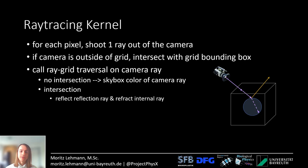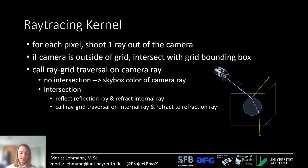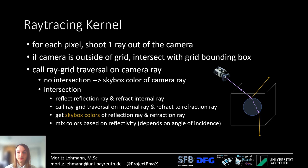If there's an intersection, I reflect a reflection ray and refract an internal ray. I call ray grid traversal again on the internal ray and then generate a refracted refraction ray. Then I get the skybox colors of the reflection and refraction rays, and finally I mix the colors based on the reflectivity, which depends on the angle of incidence. For water there's a certain curve that you can model with a few mathematical functions quite easily.